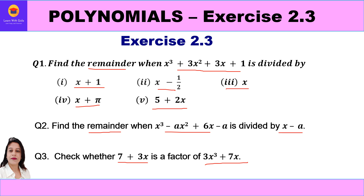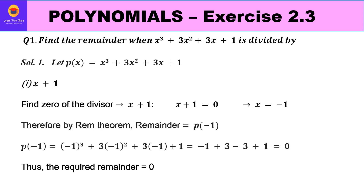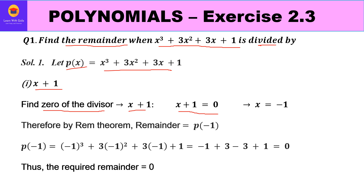Let's get started. The first question is: find the remainder when x³ + 3x² + 3x + 1 is divided by the first divisor, x + 1. Let p(x) be the given polynomial: x³ + 3x² + 3x + 1. To apply the Remainder Theorem, we first find the zero of the divisor. The divisor is x + 1, so we equate it to zero.